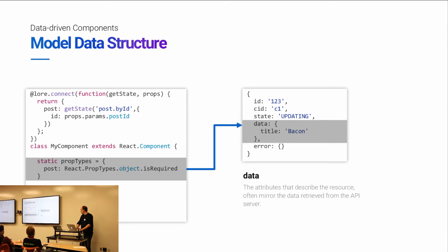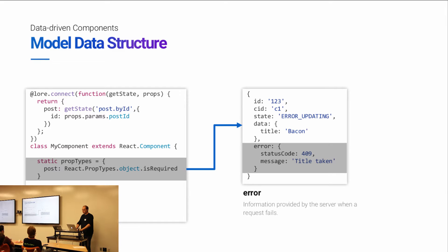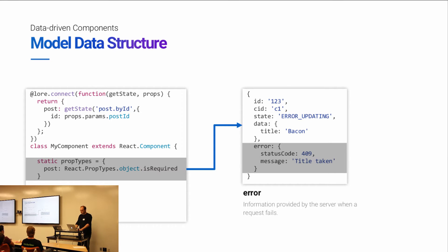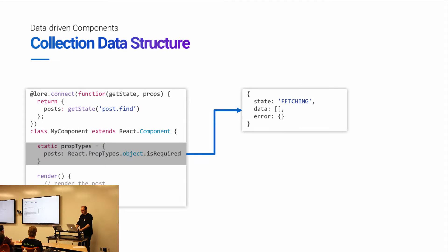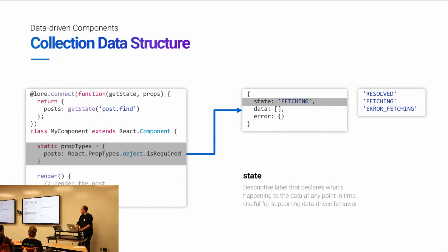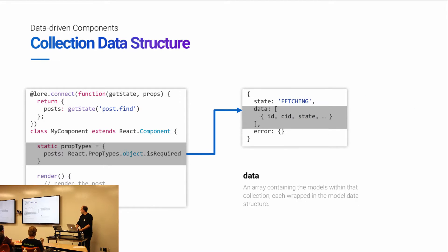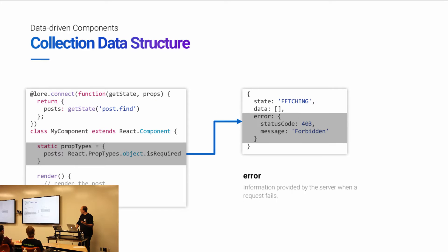I put the actual server data in the data field. In the case of an error from the server, it might be something like 'error updating', and whatever information we have from the server can be displayed in that error field. For collection components I do the same thing — state might be 'fetching' or 'error fetching', along with whatever the actual data is. You might try to do something, exceed a rate limit, and bad stuff just happens — so you need a way to express that.